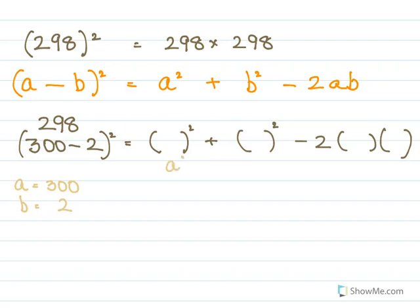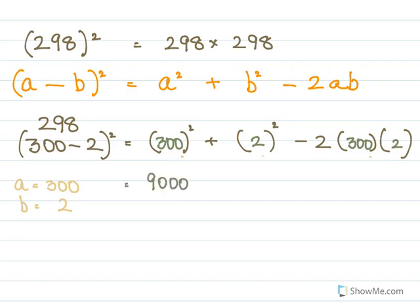So a = 300 and b = 2. Applying a² + b² - 2ab: 300² = 90000, b² = 2² = 4, and 2ab = 2 × 300 × 2 = 1200. So 90000 + 4 - 1200 = 88804, which means 298² = 88804.